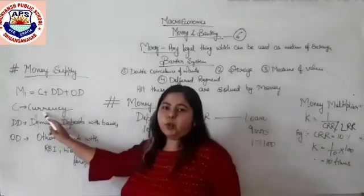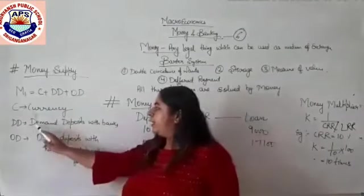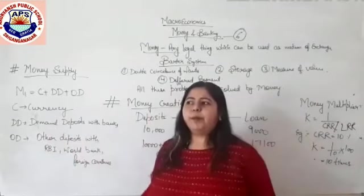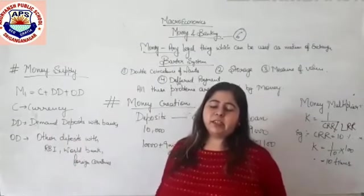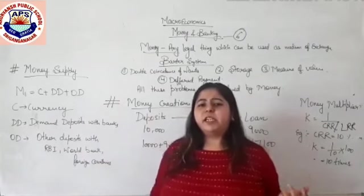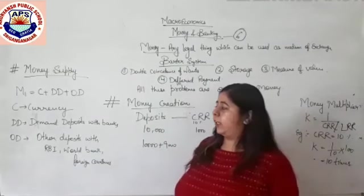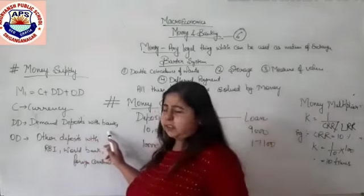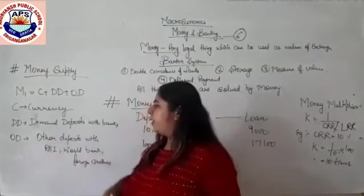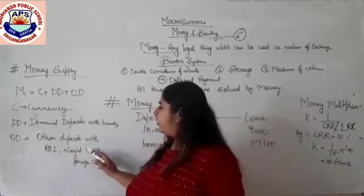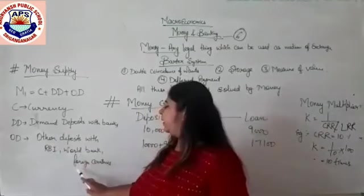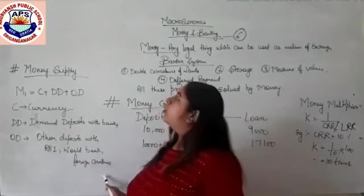In the formula M1 = C + DD + OD: C stands for currency — how much money people have with them. DD stands for demand deposits — the money we keep deposited with the bank on the condition that whenever we need it, we can easily withdraw it. So DD is demand deposits with commercial banks. OD — other deposits — includes all deposits held with RBI, the World Bank, and foreign countries. So our concept of money is now complete.